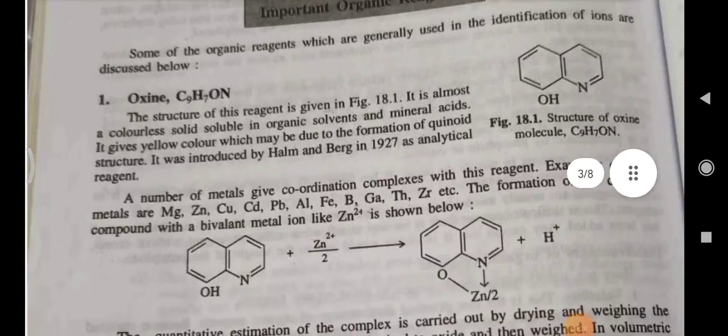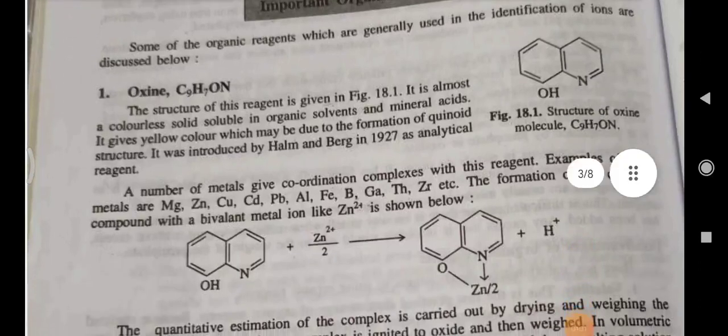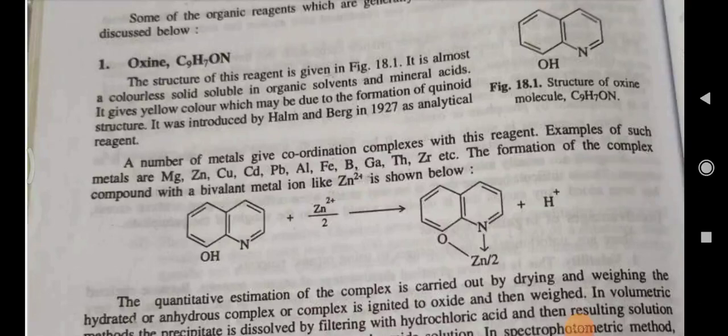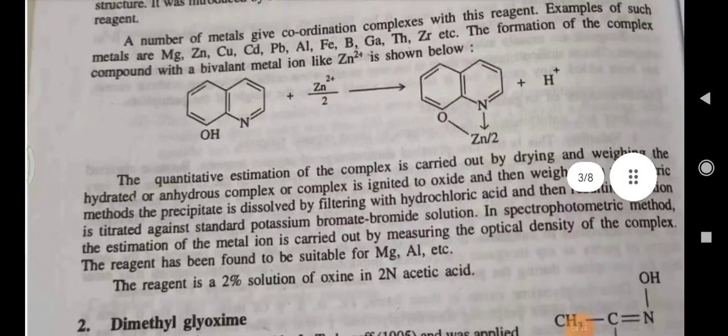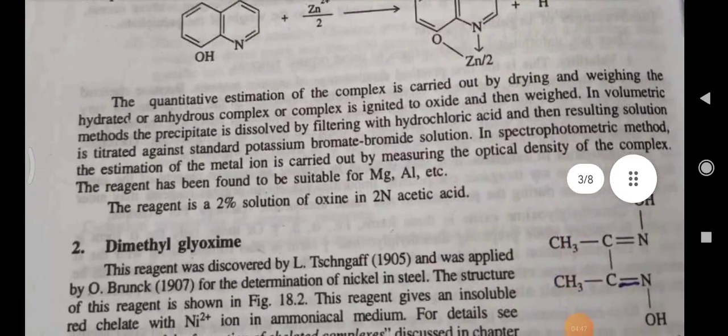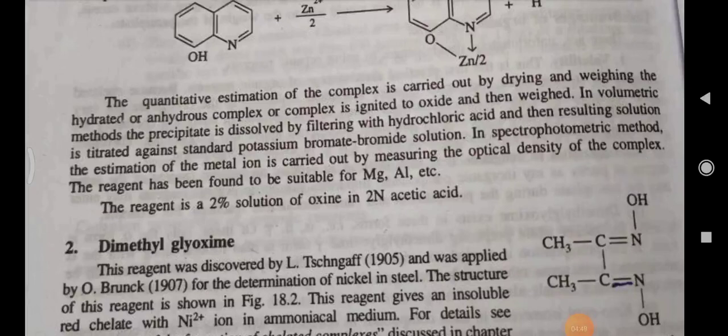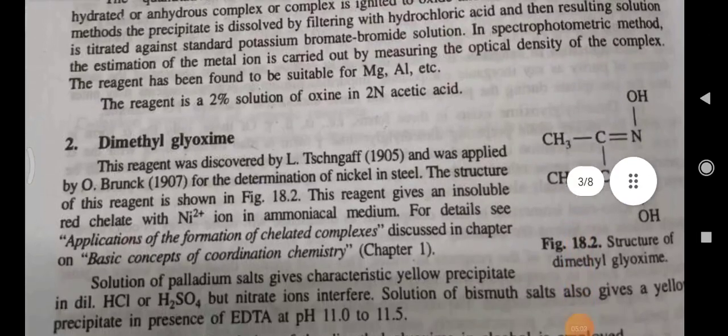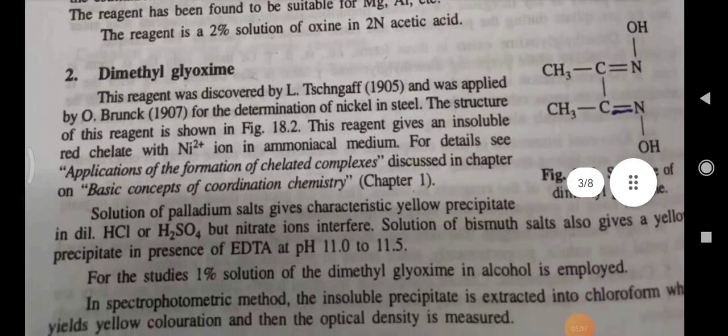Important organic reagent: Oxine (C9H7O). The structure of this reagent is given. It is almost a colorless solid, soluble in organic solvents and mineral acids. It gives a yellow color which may be due to the formation of a quinoid structure, and it was introduced by Ham and Berg in 1927 as an analytical reagent. The quantitative estimation of the complex is carried out by drying and weighing the hydrated or anhydrous complex, or the complex is ignited to oxide and then weighed. In the volumetric method, the precipitate is dissolved by filtering with hydrochloric acid. The reagent is used as a 2% solution of oxine in 2N acetic acid.